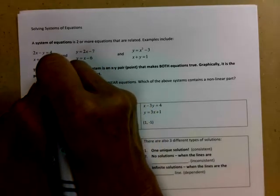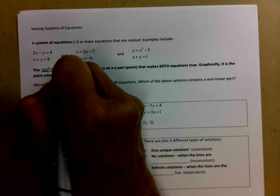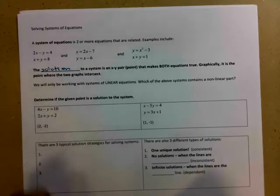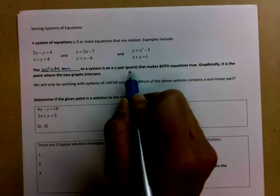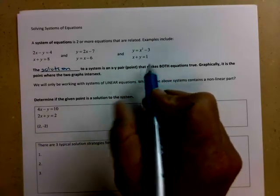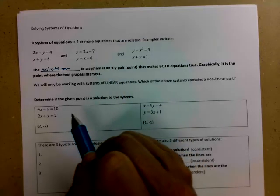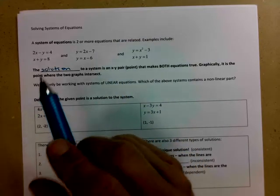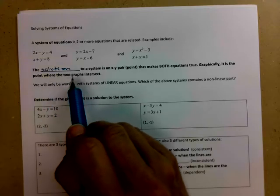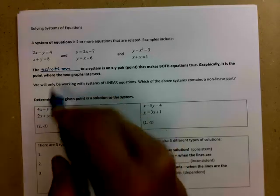So the solution, which is what we'll be after, to a system is an xy pair, an ordered pair, a point that makes both of the equations true at the same time. So graphically, it's the point where the two graphs intersect.